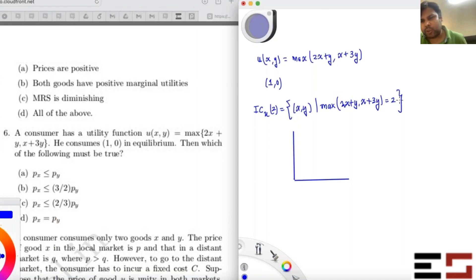So I'll first plot 2x plus y equal to 2. Well, it's a straight line with intercepts (1,0) and (0,2). And what about x plus 3y equal to 2? Again, it's a straight line with intercepts (2,0) and (0, 2/3). So this is 2/3, this is 2.